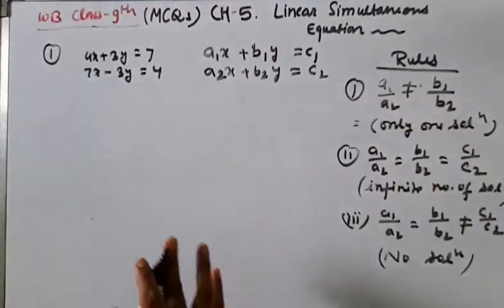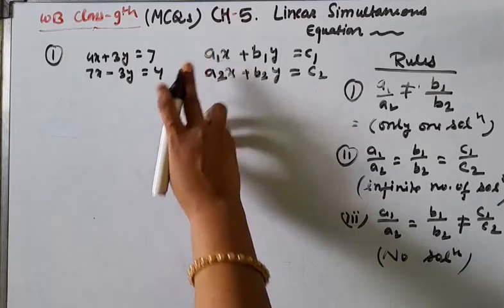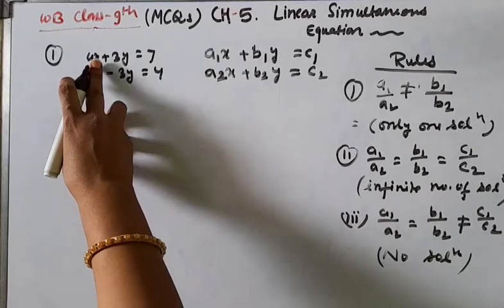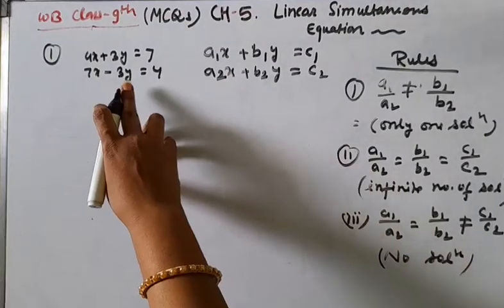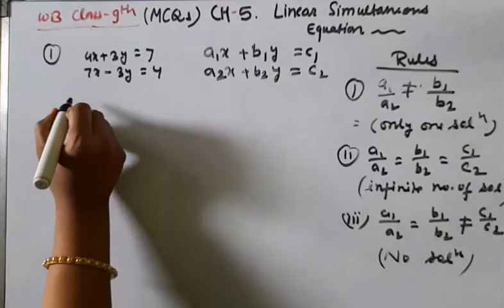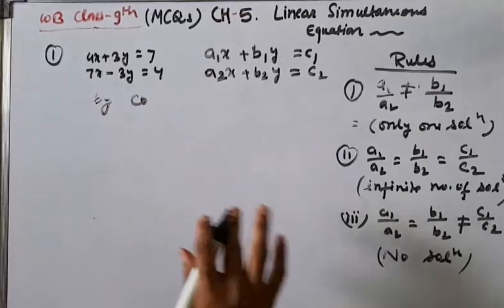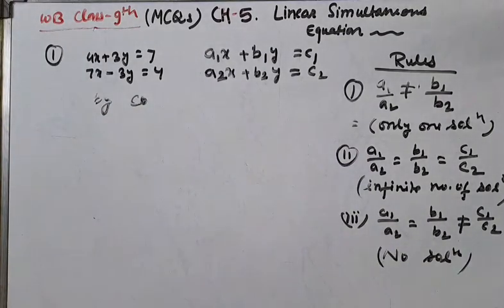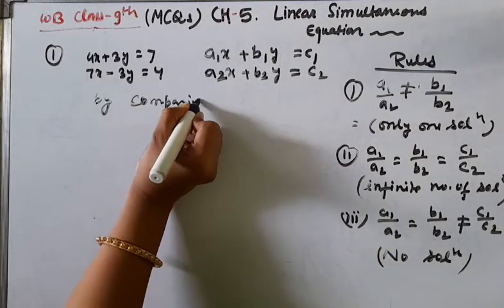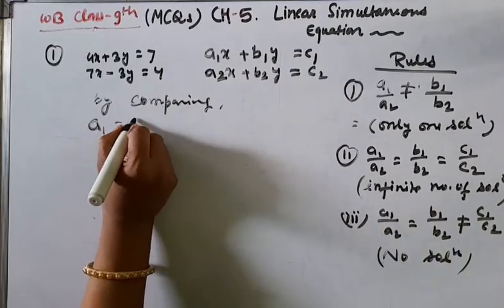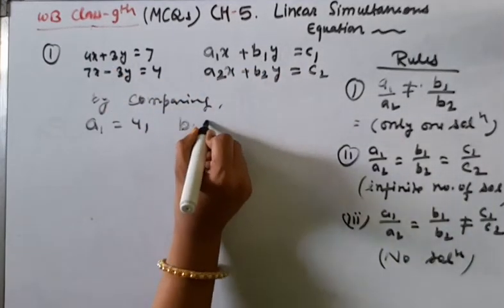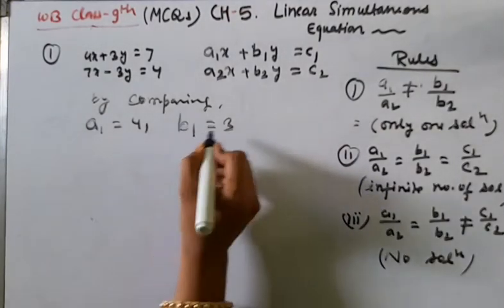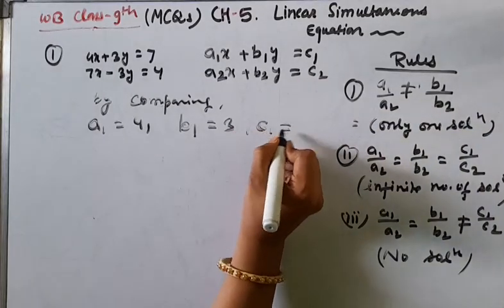We use the equation in this standard form. Here, x's coefficient is a1 and y's coefficient is b1. By comparing with the standard form, we get: A1 equals 4 (x's coefficient), B1 equals 3 (y's coefficient), and C1 equals 7.